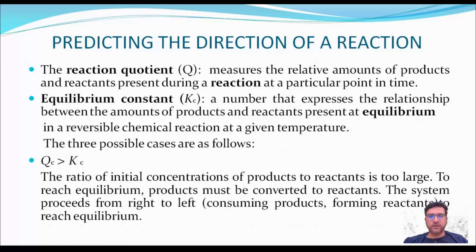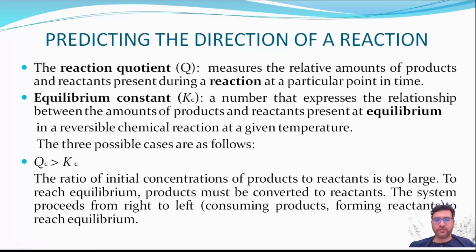The reaction quotient measures the relative amounts of products and reactants present during a reaction. The equilibrium constant is the number that expresses the relationship between the amounts of products and reactants present at equilibrium. When predicting the direction of a reaction, if the reaction quotient Q is greater than the equilibrium constant K, then products must be converted to reactants — the system proceeds from right to left.